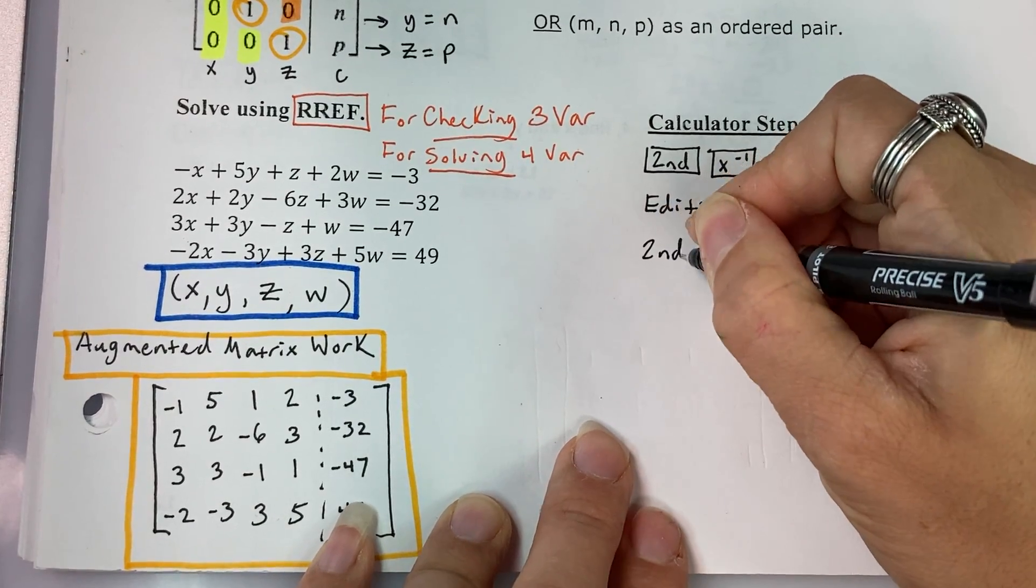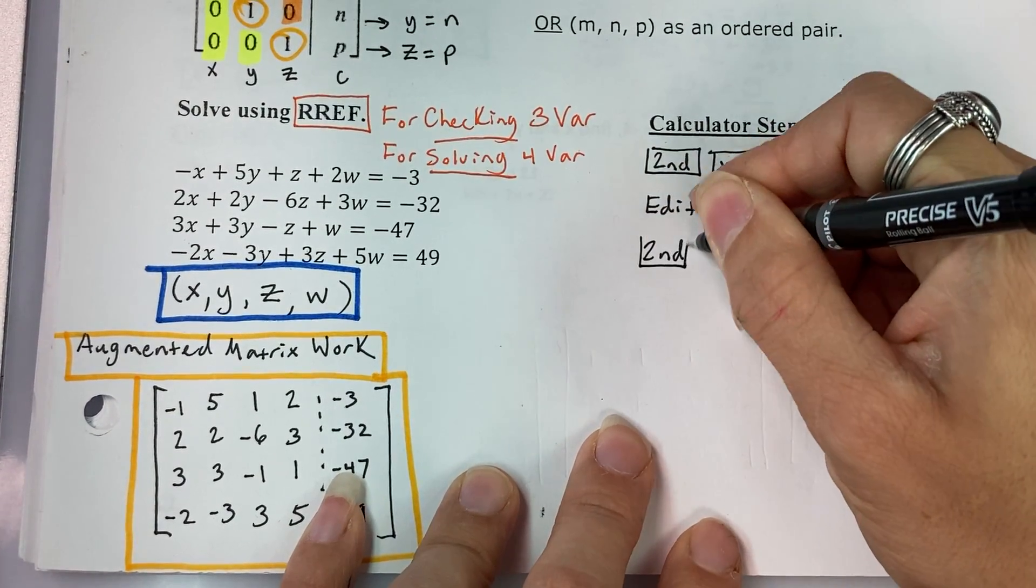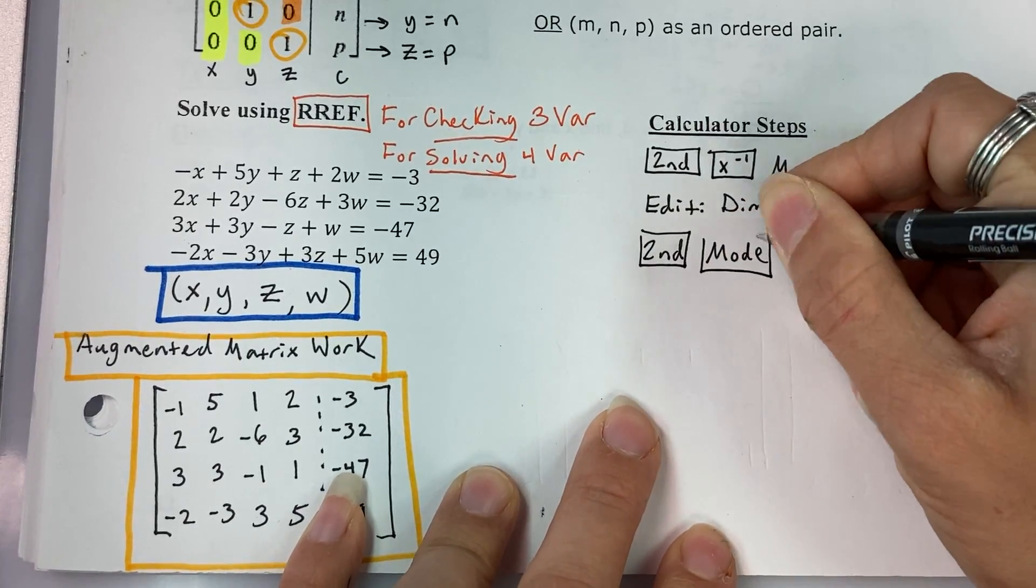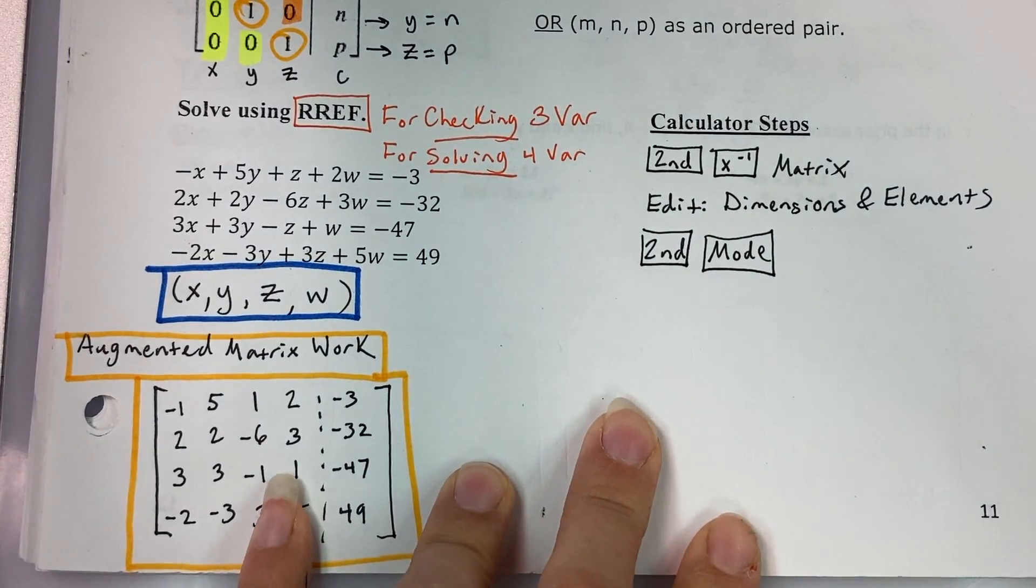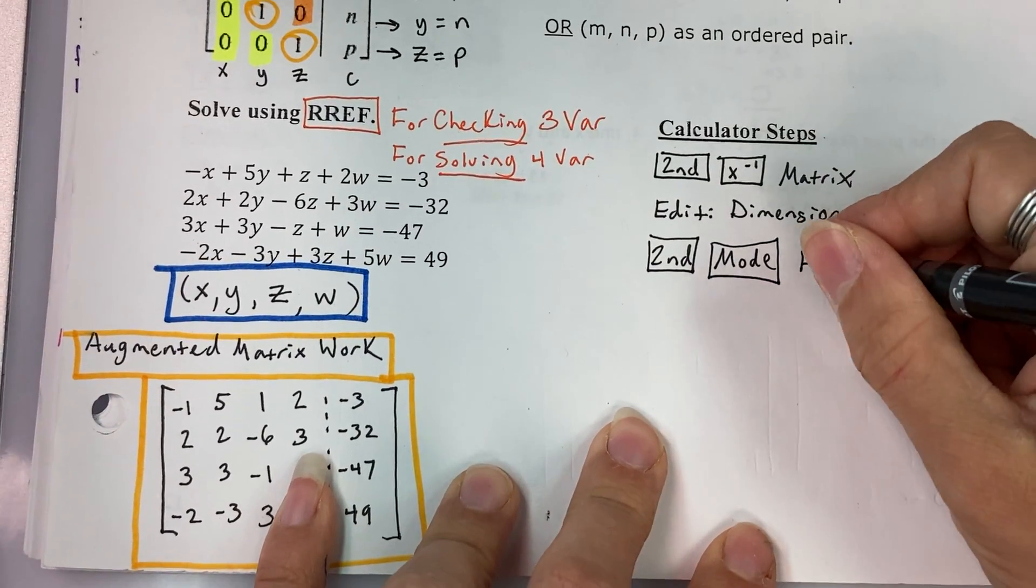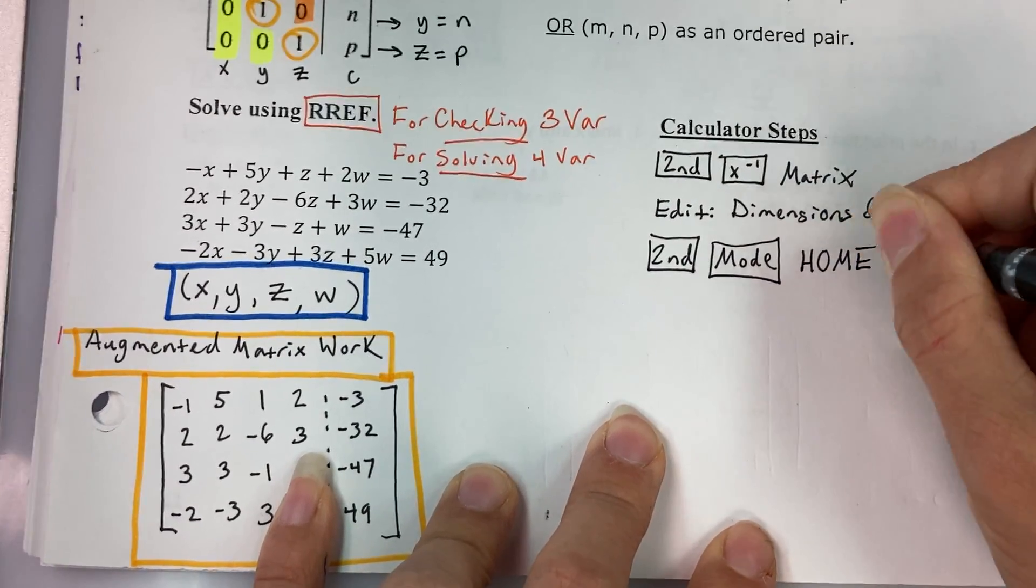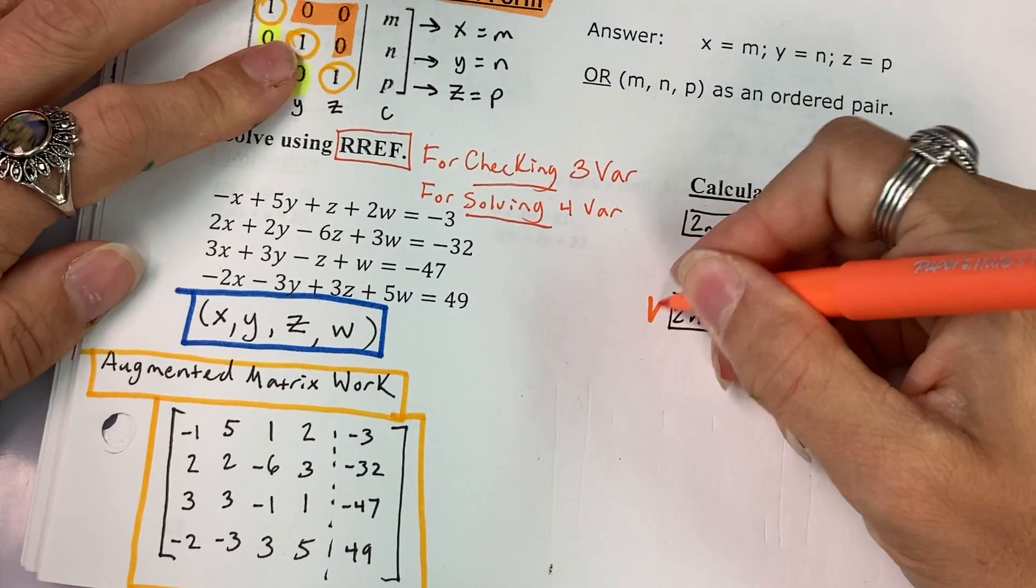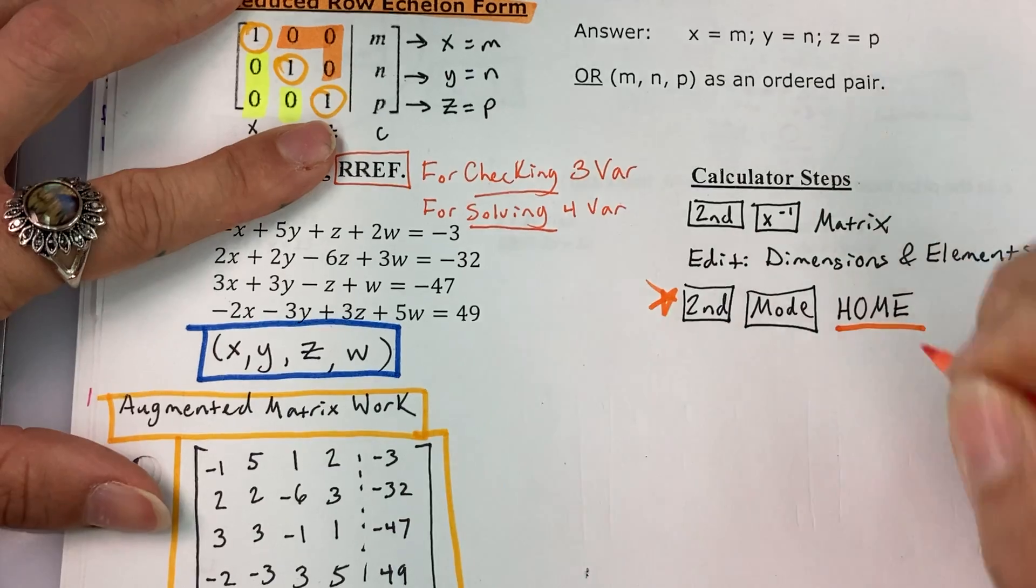This is the most important step, and you'll see why it's easy to forget this step, and why it feels kind of counterintuitive. After you have typed in your matrix, you are going to hit second mode to go to the home screen. So I'm going to put a little star by this step. Second mode to go to the home screen.